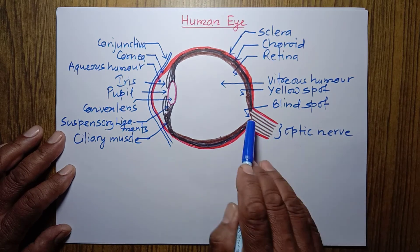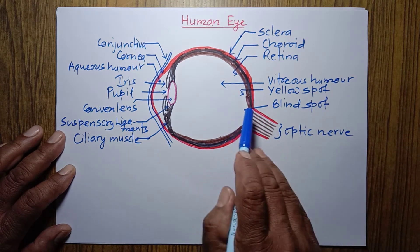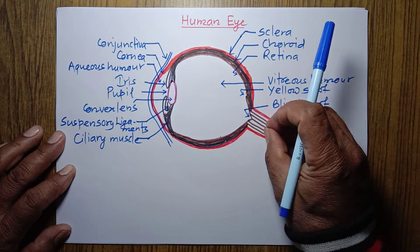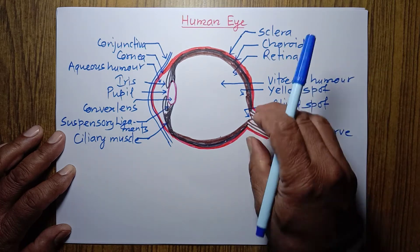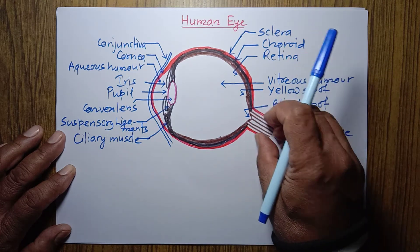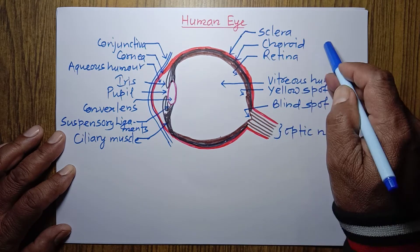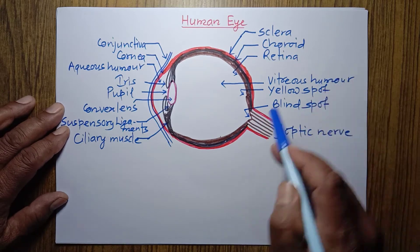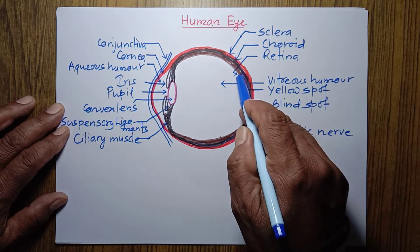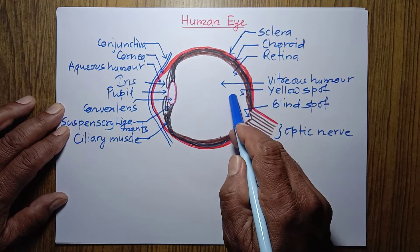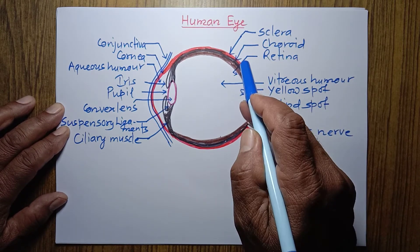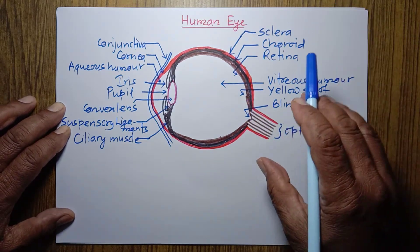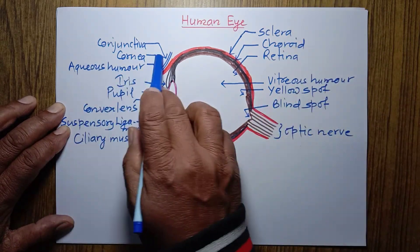Optic nerve — this nerve arises from the retina and the fibers make a bundle. This bundle goes up to the brain and carries the information of the image which falls on the retina to the brain, and then we will be able to see that object.